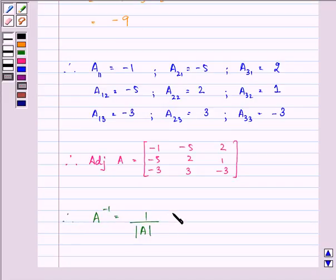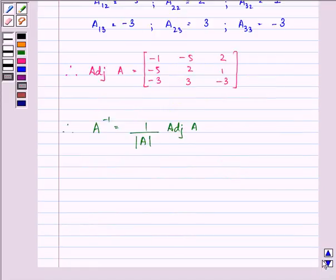This is a known formula for us. We have the value of determinant A is minus 9, so A inverse equals minus 1 by 9 times adjoint A.